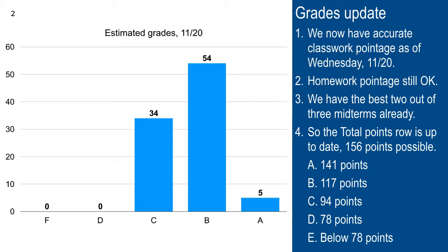Everybody in here is at least a C, though there aren't many A's — it's still tough to get an A. We still have clicking today, so your classwork pointage might change. We'll have some homework, and of course the final exam — that's a big bundle of 84 points, bringing us up to 240 after the final. We're not going to do a whole lot of clicking, so when I convert it to something out of 36, it might not change much.